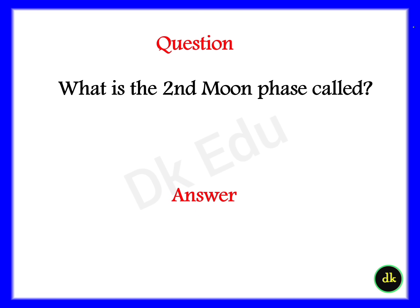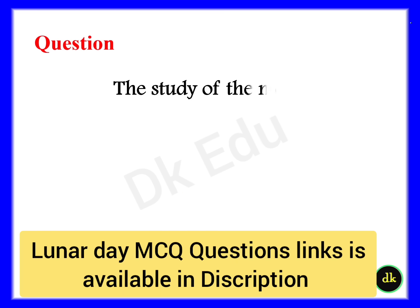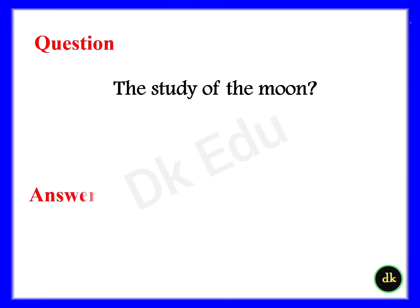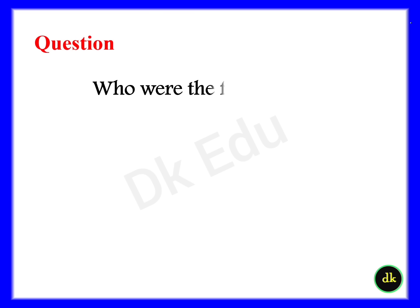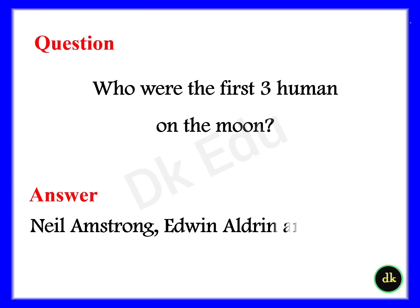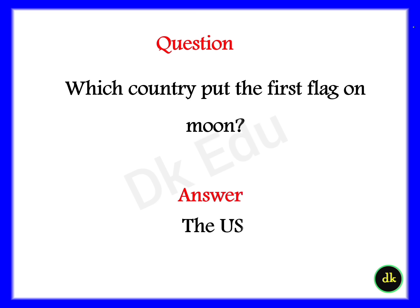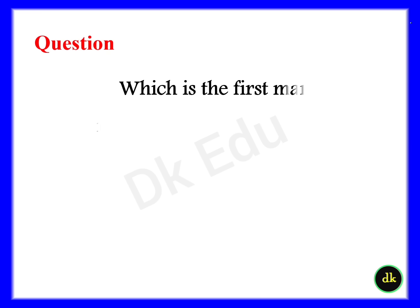Question: What is the second moon phase called? Answer: Waxing Crescent. Question: What is the study of the moon called? Answer: Selenology. Question: Who were the first three humans on the moon? Answer: Neil Armstrong, Edwin Aldrin, and Michael Collins.